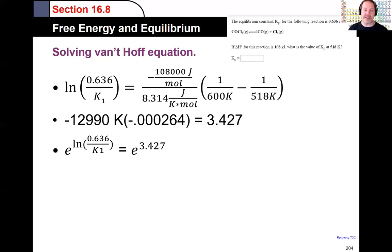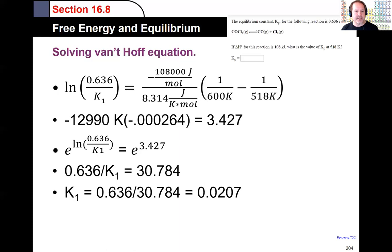Then I'm going to use the E function to undo the natural log. And then I'm going to take E to the 3.427. You say, well, is that a positive number? Well, the negative in front of the enthalpy, and then the temperatures gave me a negative number. So two negatives make a positive. So now it becomes 0.636 divided by K1 equals 30.784. You should follow along in your own calculator and make sure you know how to do these problems. Solving for K1, I get 0.0207.